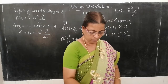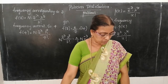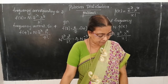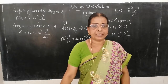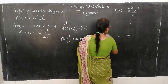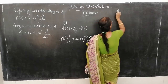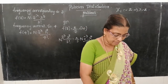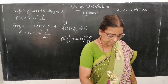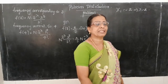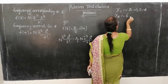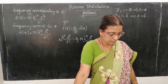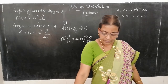Example 8.40. Suppose that the number of telephone calls coming into a telephone exchange between 10am and 11am, say X₁, is a random variable with Poisson distribution with parameter 2. The number of telephone calls between 11am and 12 noon, say X₂, has a Poisson distribution with parameter 6. If X₁ and X₂ are independent, what is the probability that more than 5 calls come in between 10am and 12 noon?